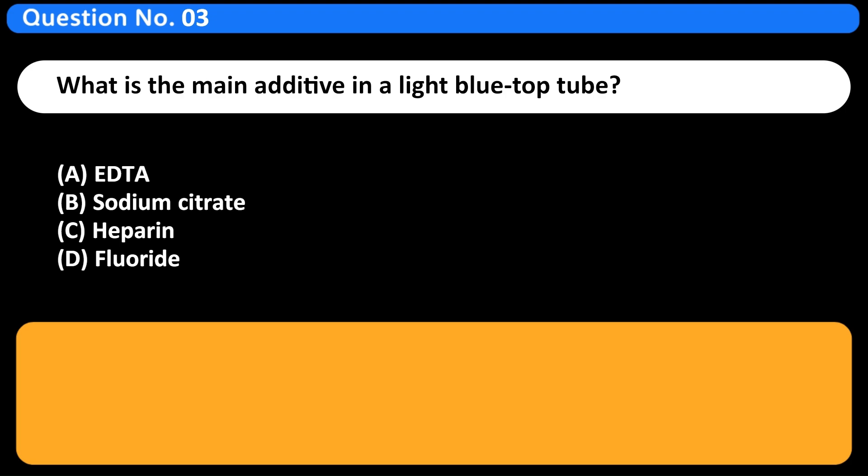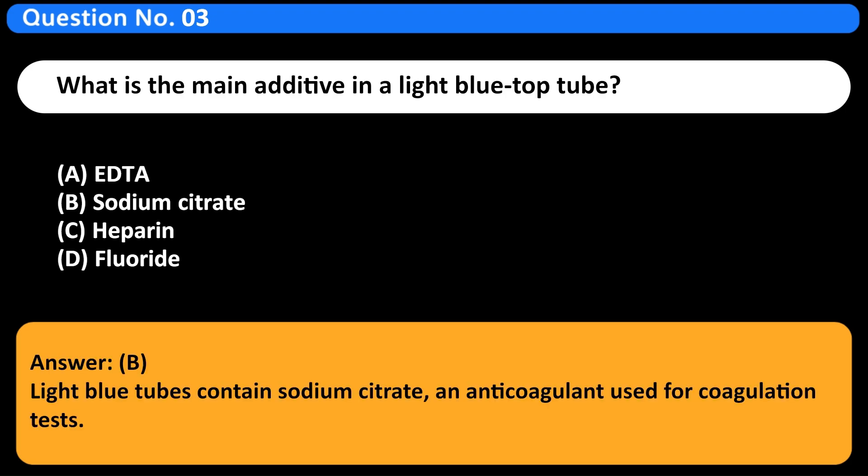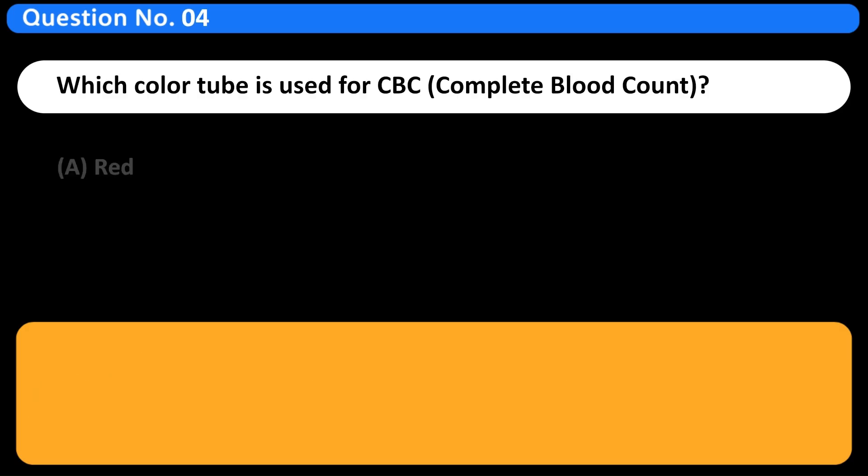What is the main additive in a light blue top tube? A. EDTA. B. Sodium citrate. C. Heparin. D. Fluoride. Answer B. Light blue tubes contain sodium citrate, an anticoagulant used for coagulation tests.